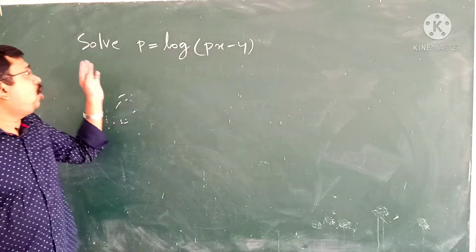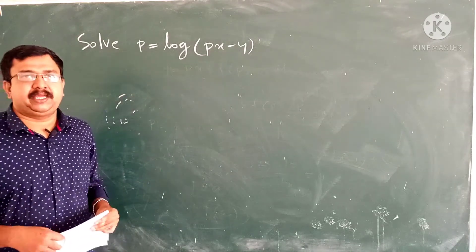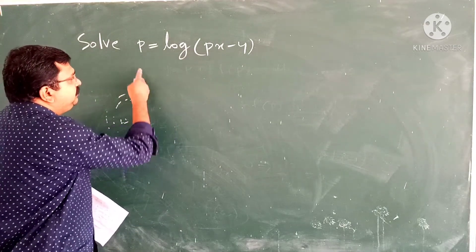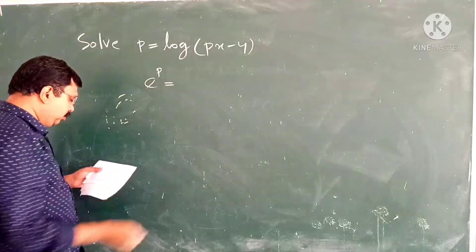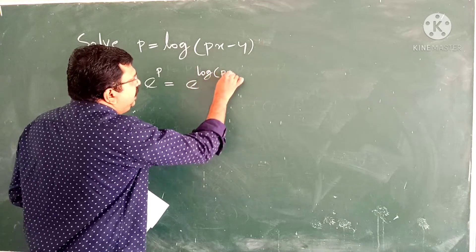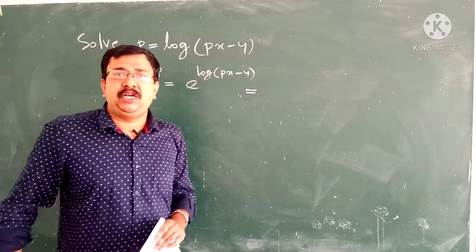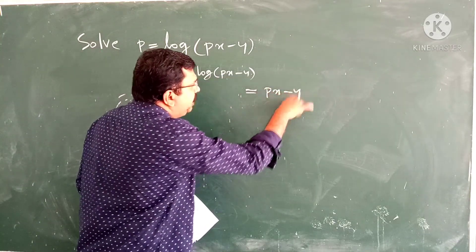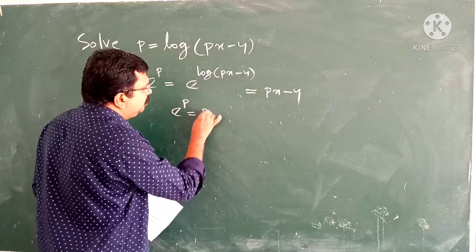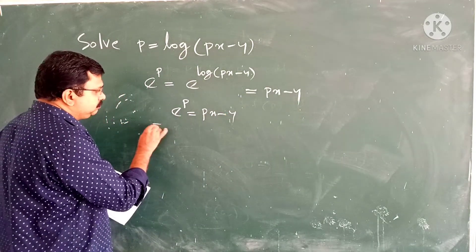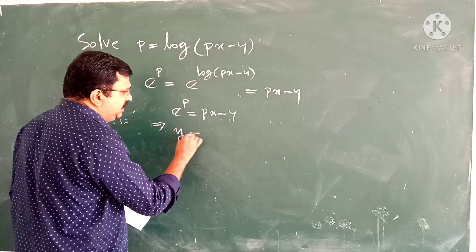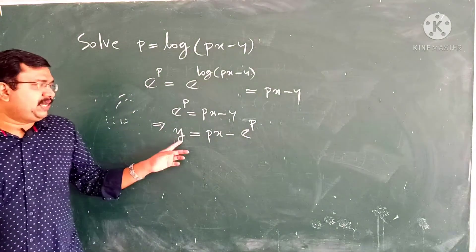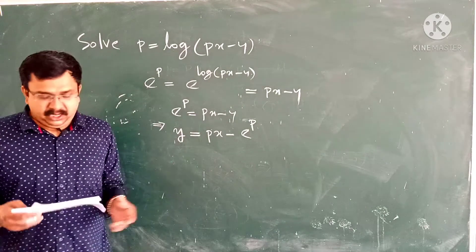Our next question is: solve p equal to log of px minus y. Taking exponential on both sides, we get e to the power p equal to e to the power log of px minus y. We know that e to the power log a equal to a, therefore e to the power log of px minus y equal to px minus y. This implies y equal to px minus e to the power p, which is our Clairaut equation.